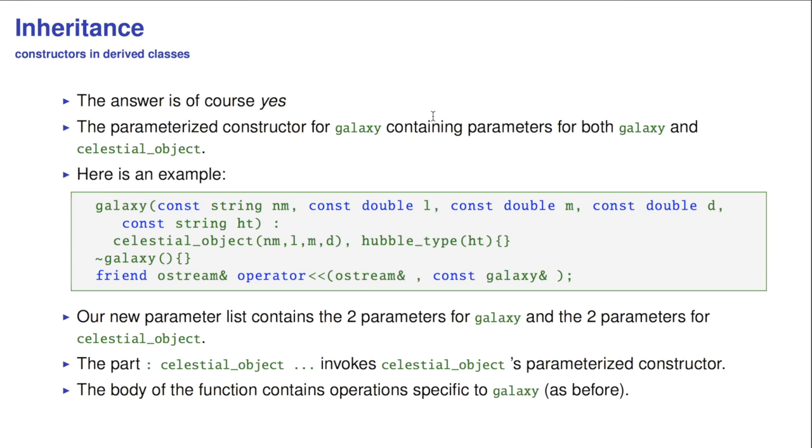But how? The parameterized constructor for galaxy containing parameters for both galaxy and the celestial object is shown below, and essentially what you do, you call the celestial object constructor first, and then initialize the elements in the derived class. So, you've got these four parameters for the celestial object and the one parameter for galaxy. The body of the function, which in this case is empty, in principle should contain operations specific to galaxy alone, not specific to the base class.